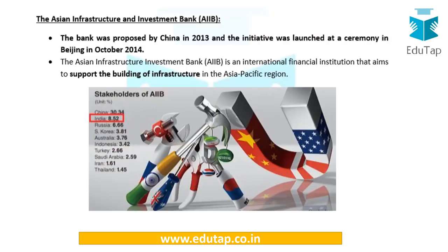The Asian Infrastructure Investment Bank is considered a brainchild of China, which proposed it in 2013, and the initiative was launched in Beijing. AIIB is focused on the creation of infrastructure in the Asia-Pacific region. The highest stakeholder is China itself, followed by others at around 8.52 percent.